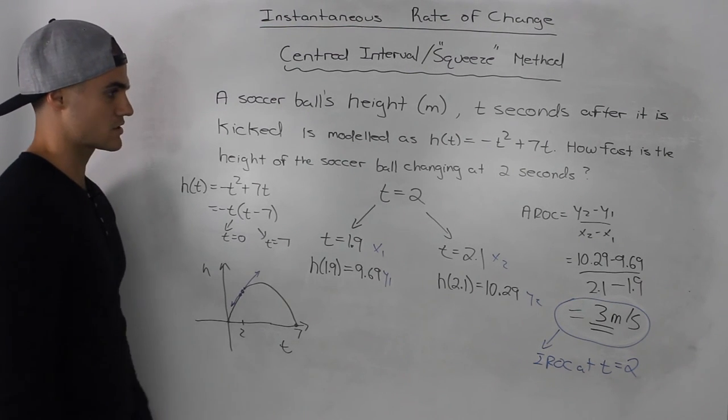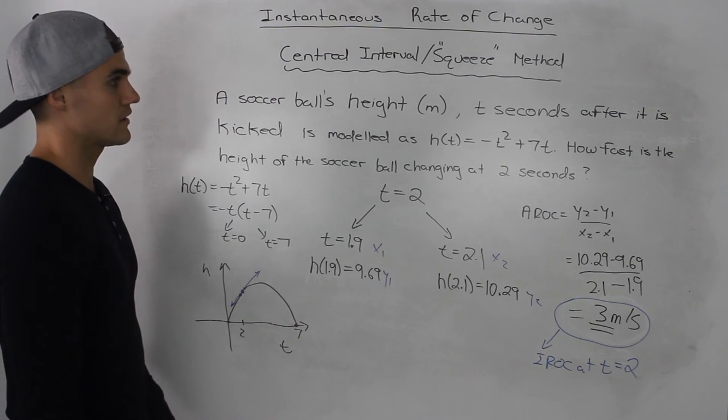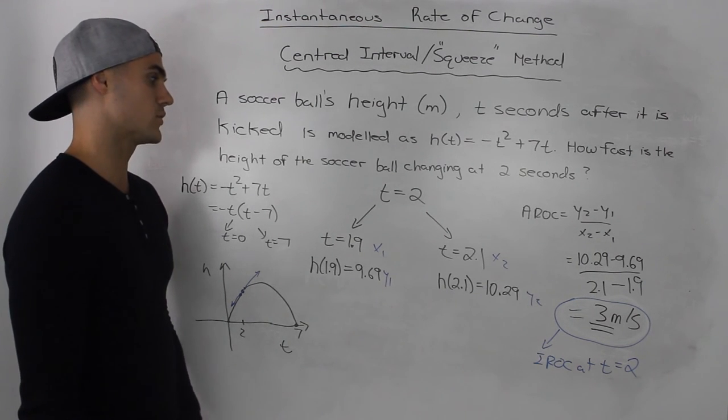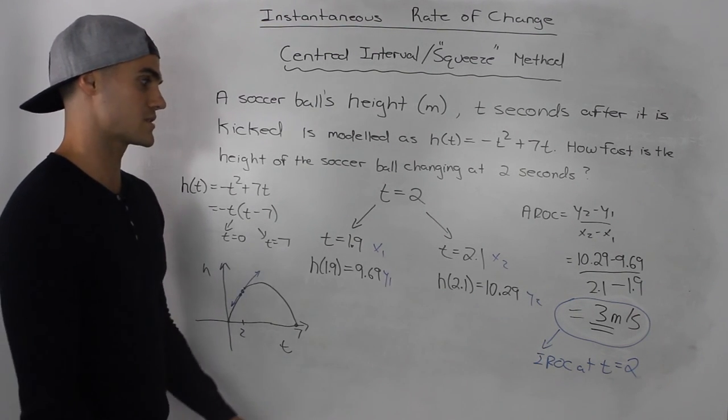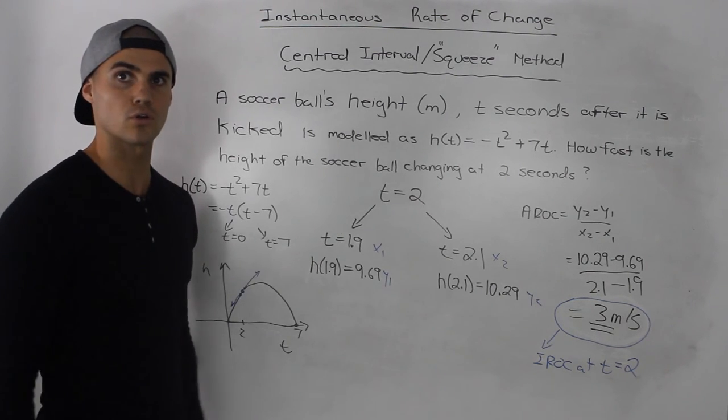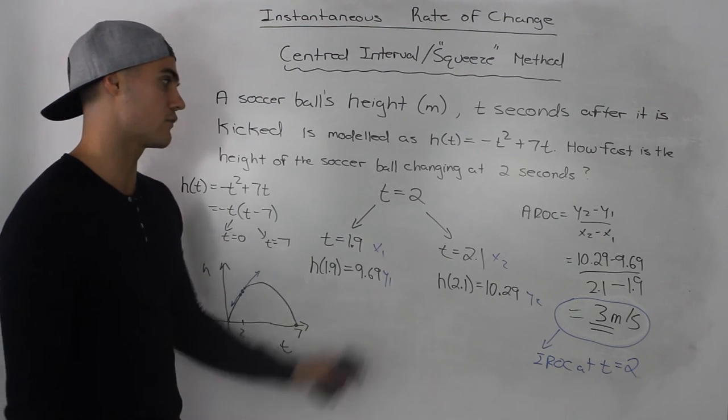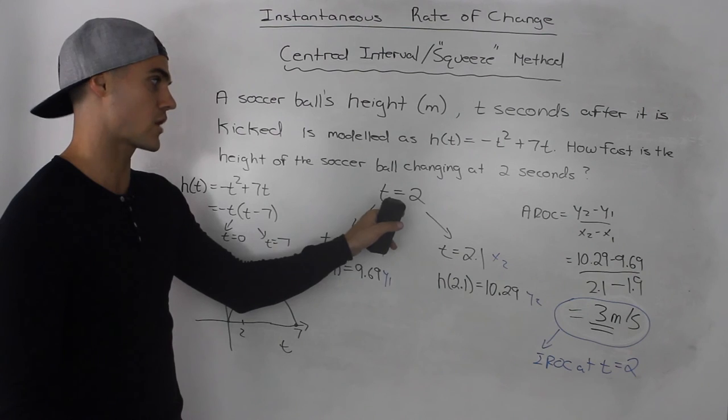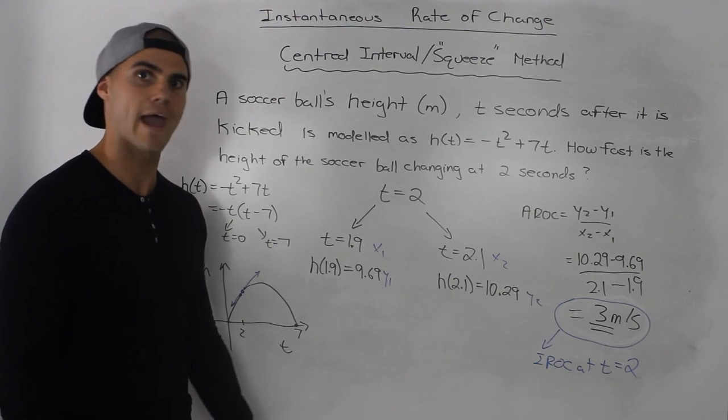So that's how it looks like graphically. Centered interval method is pretty easy. You only have to find the average rate of change once between two points that are close both to the left and right of the point that you're trying to find the instantaneous rate of change at.